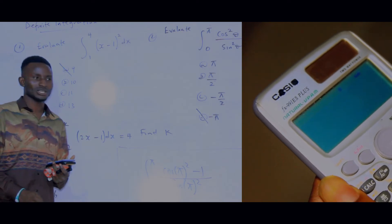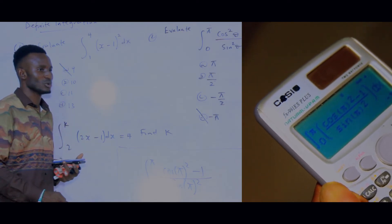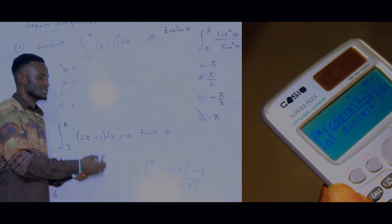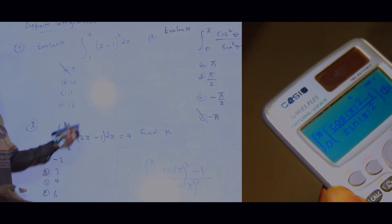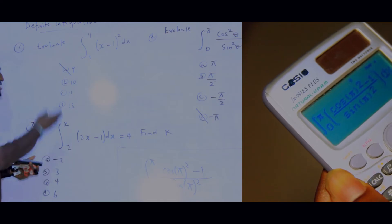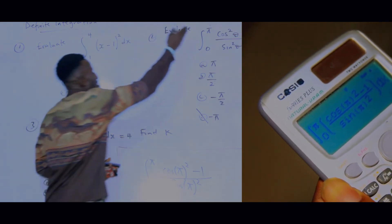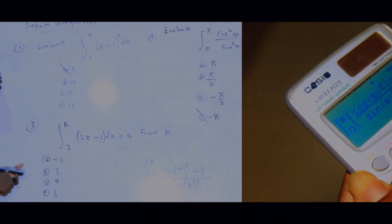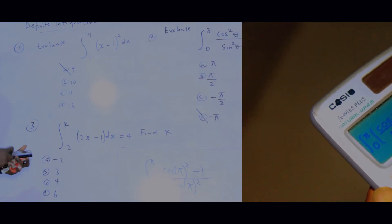When you observe the answer on your calculator, the answer is going to be minus pi. That is the solution to the second question. The same approach is used here as in the first question.